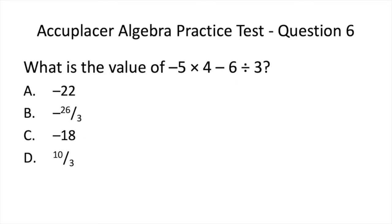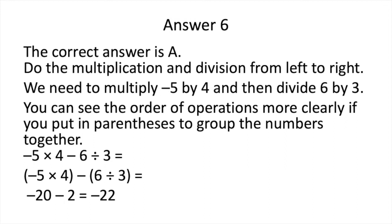Here is Question 6. Now pause to solve. The correct answer is A. Do the multiplication and division from left to right. We need to multiply negative 5 by 4 — we put parentheses around that as shown below — and then we need to divide 6 by 3, and we also put parentheses around that to make the operations a bit clearer. You can see our answer is negative 22.